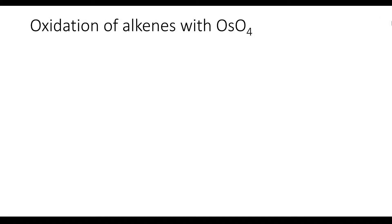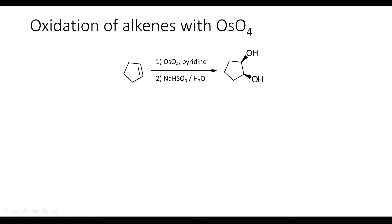The oxidation of alkenes to diols with osmium tetroxide is carried out in two steps. In this example where cyclopentene is oxidized to cyclopentanediol, the first step involves osmium tetroxide and pyridine as a solvent, and the second step involves sodium bisulfite or water. The product of this reaction is a cis diol.